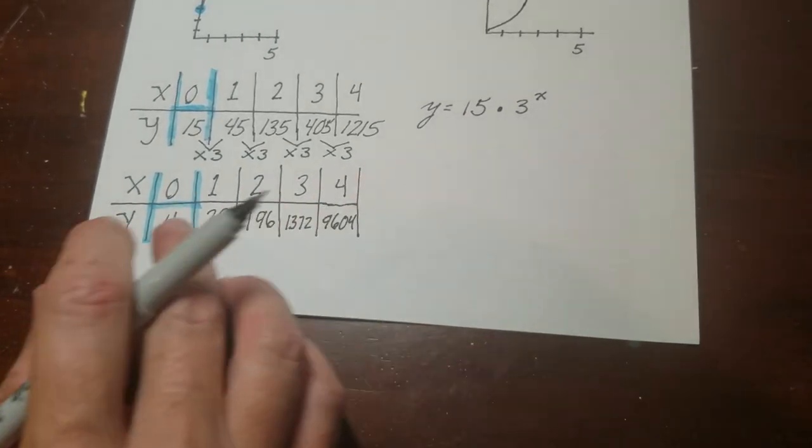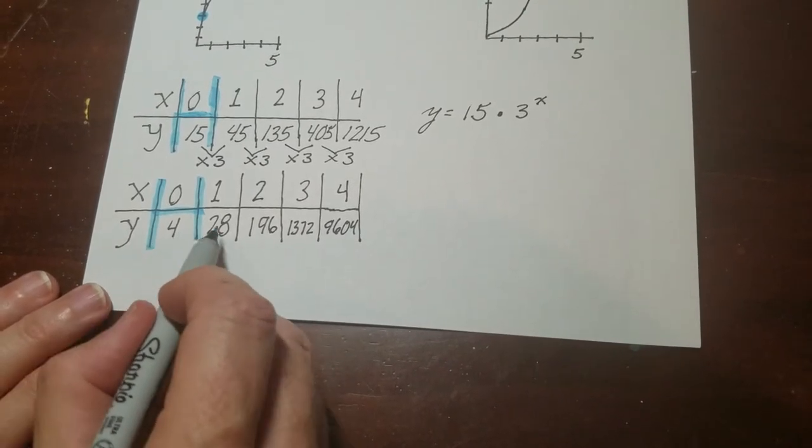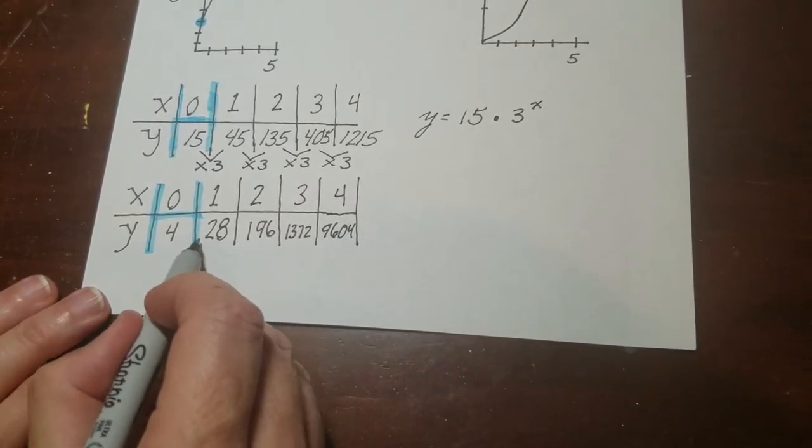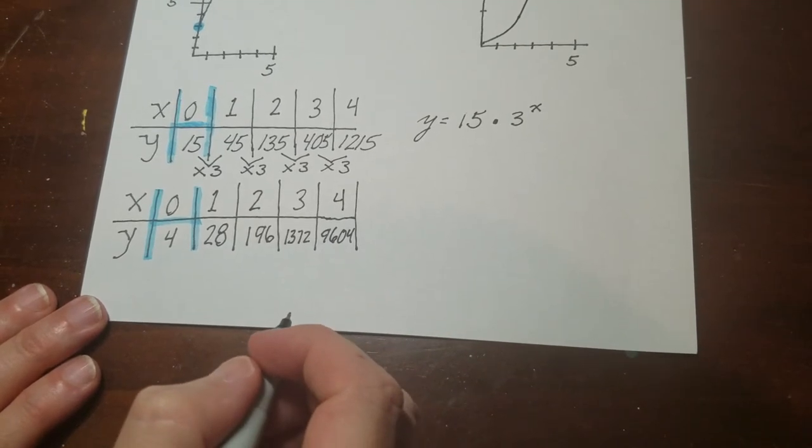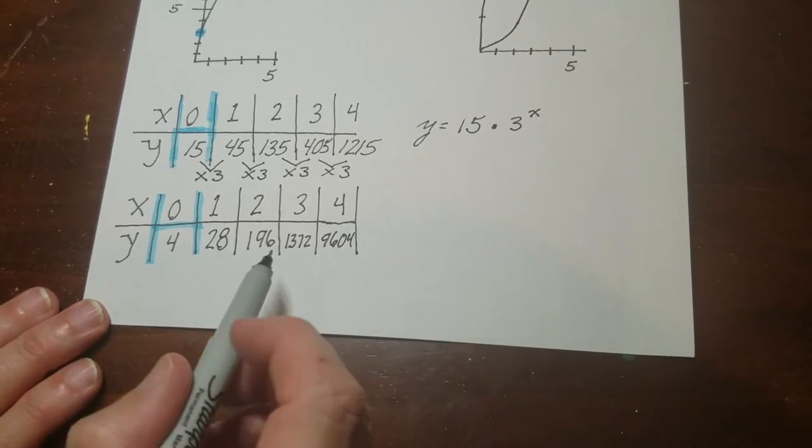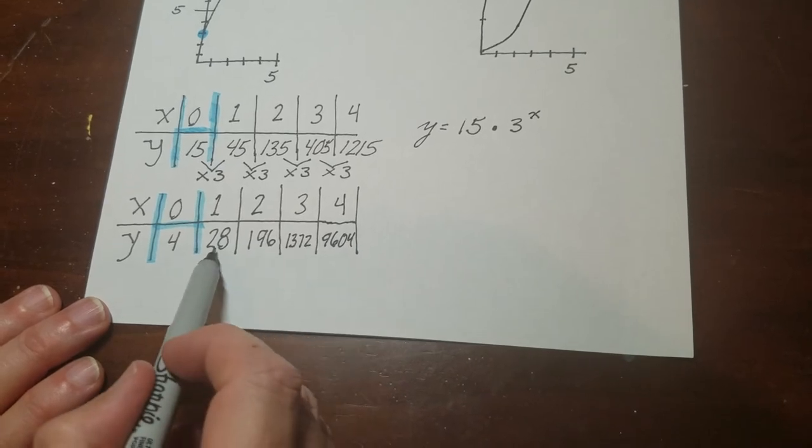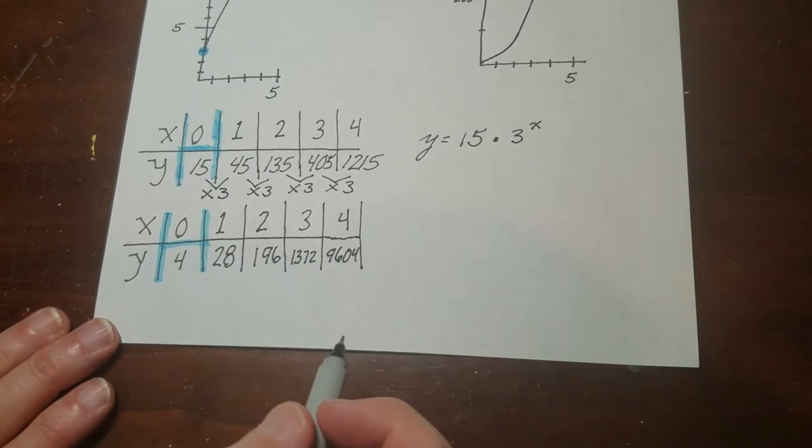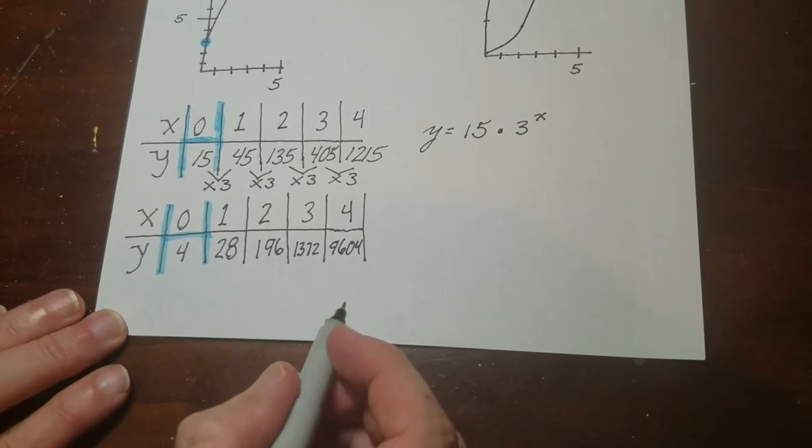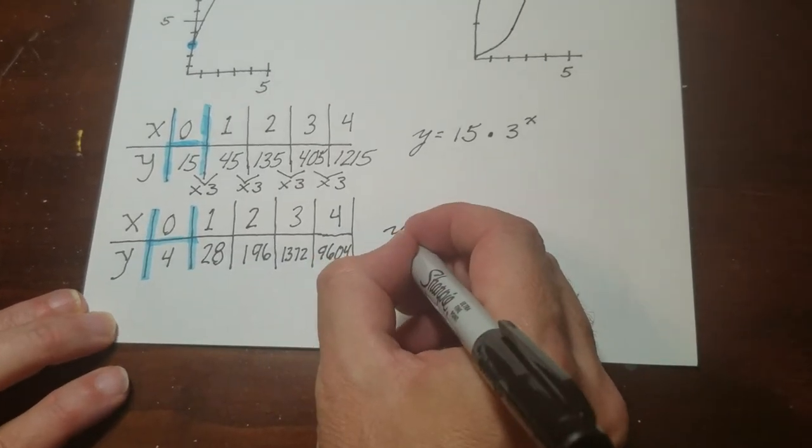So then when I go down to this table over here, I got 4, 28, 196. Again, it's jumping up by way too much for me to think that there's adding going on. It's definitely, even if it was adding a big number, it's not the same number. I mean, here I'm going from 4 to 28, and then over here it's 196 all the way up to 1372 already. So again, this is definitely looking exponential to me.